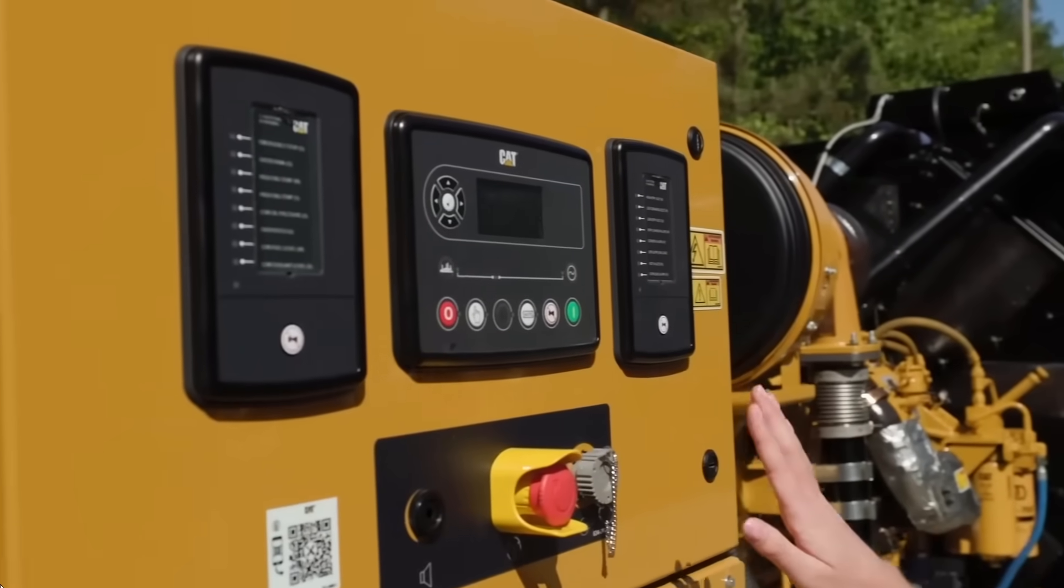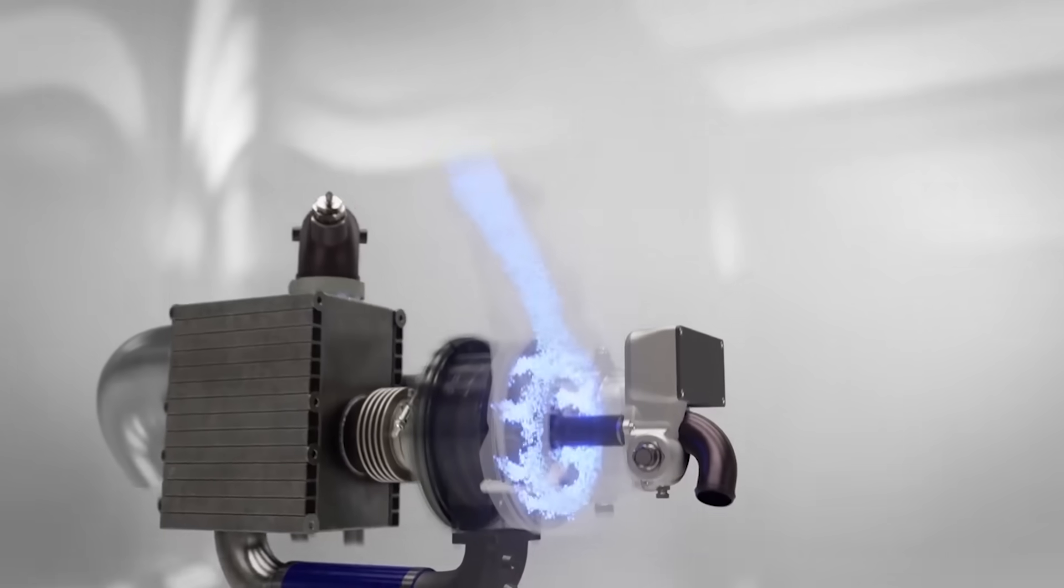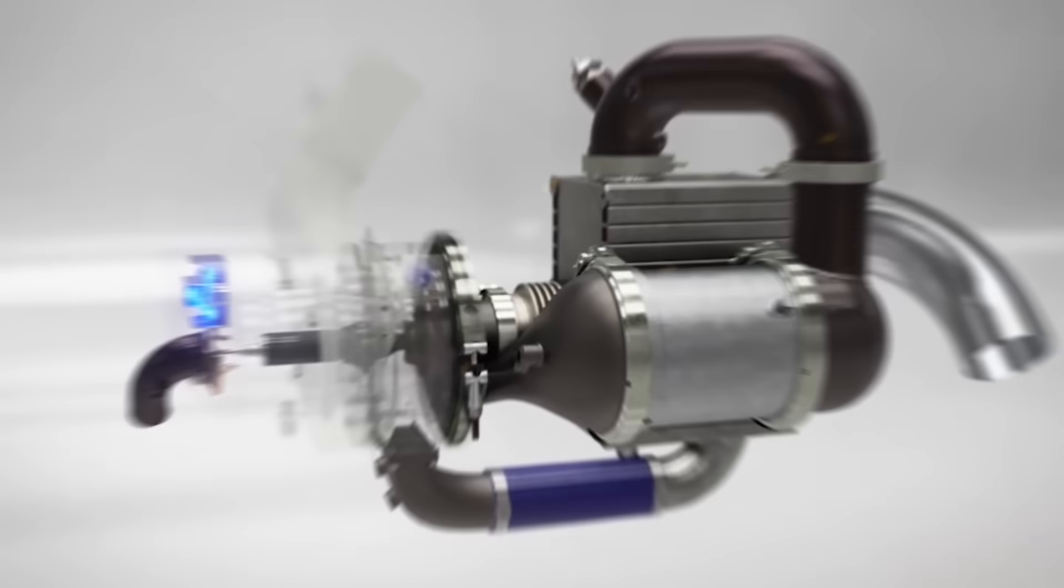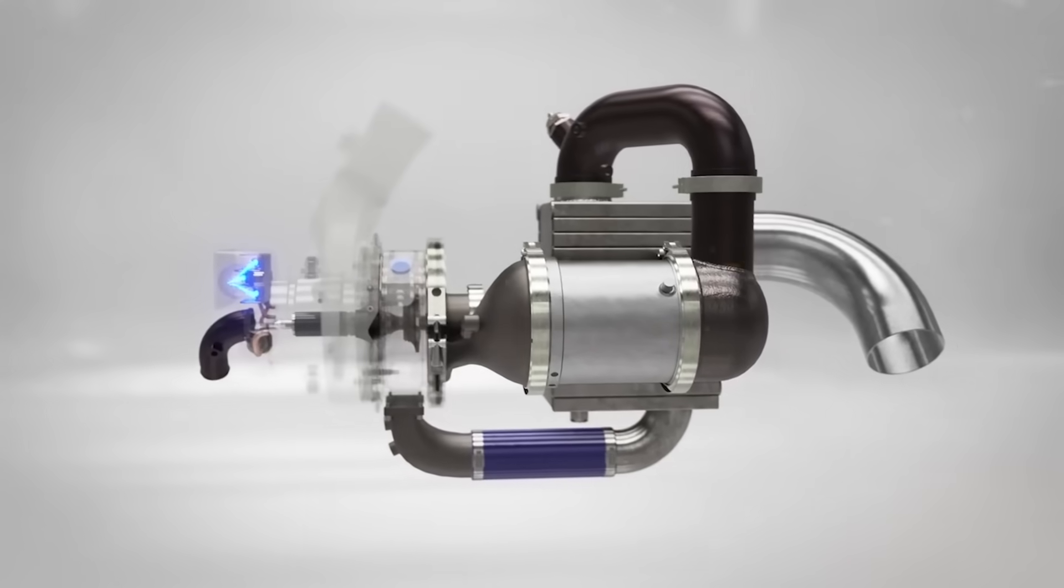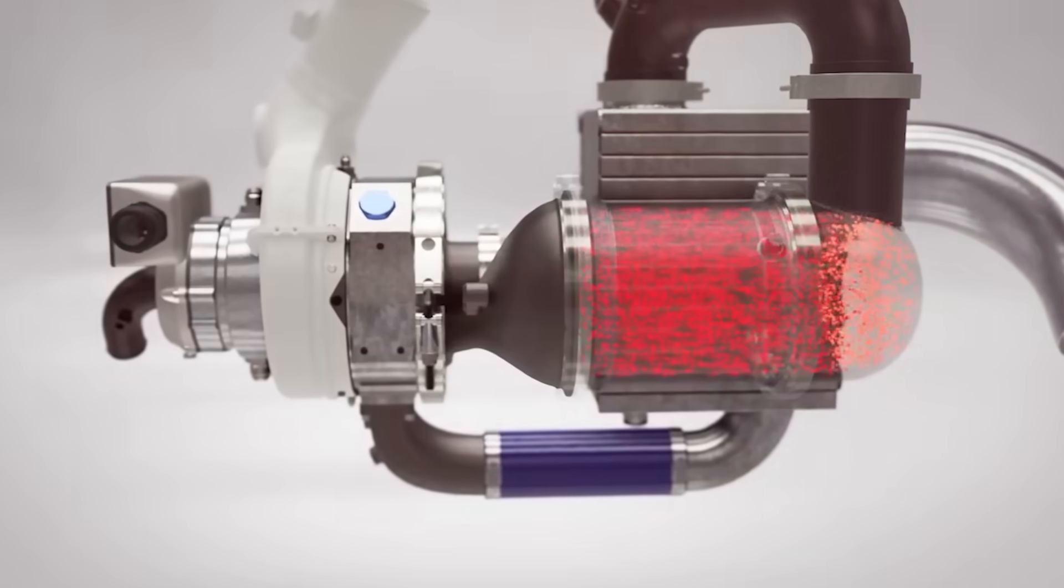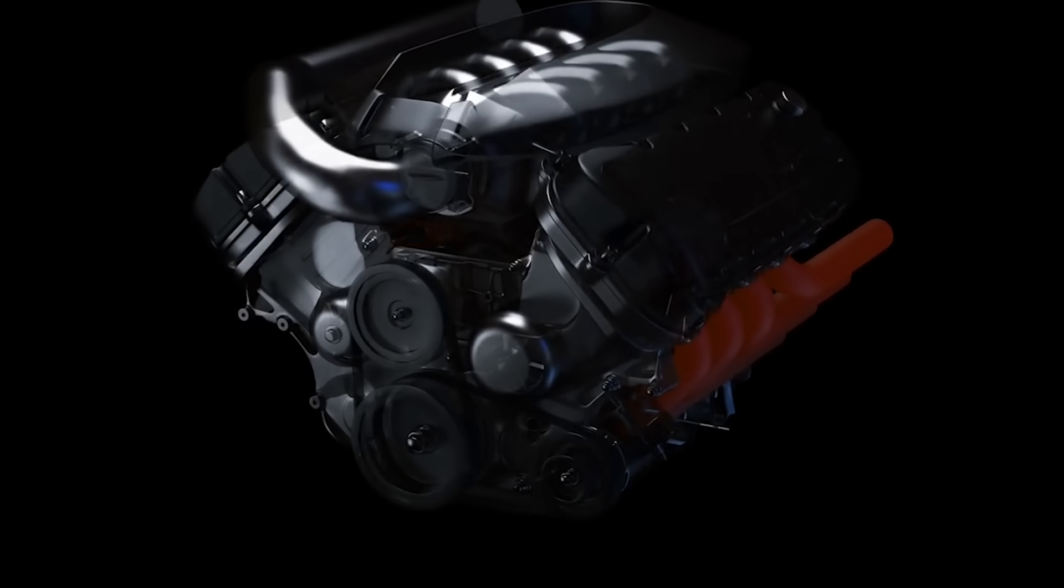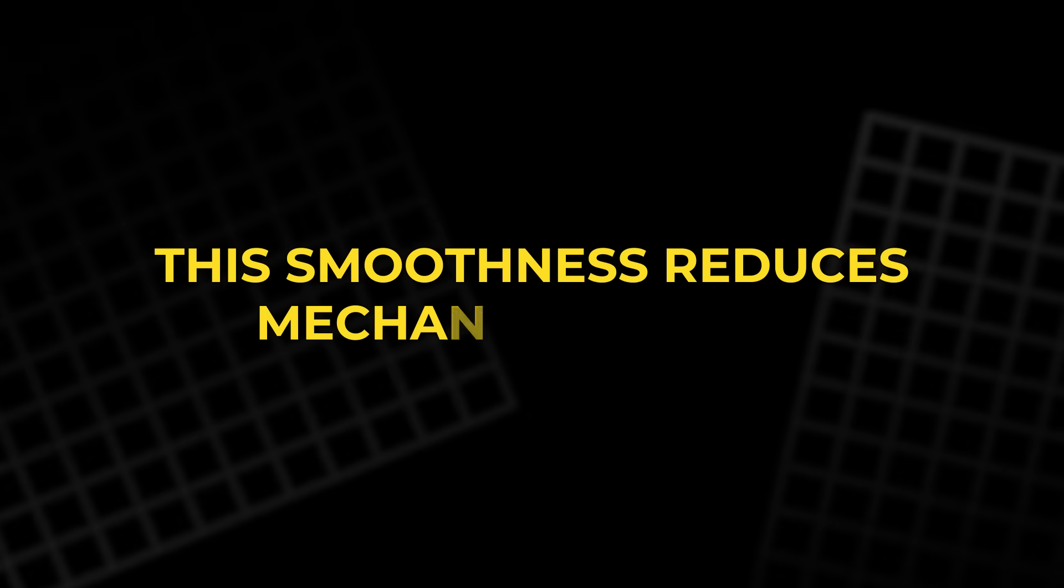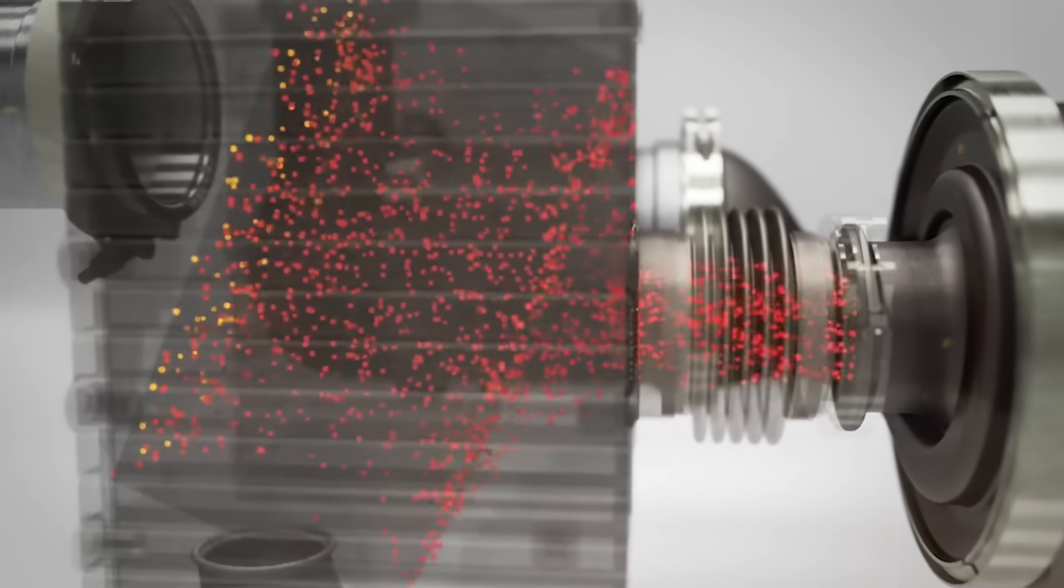The CAT-Gen's continuous cycle creates a smooth flow of energy transformation. Air enters, is compressed, heated, reacted, expanded and cooled. Heat moves forward through the recuperator. Mechanical rotation feeds the generator. Electrical power flows outward to wherever it is needed. The entire system is designed to maintain a steady rhythm of operation, avoiding the jerky motion and vibration found in piston-based engines. This smoothness reduces mechanical wear, supports longer service intervals and increases reliability.